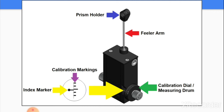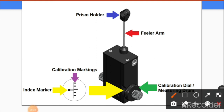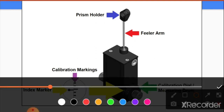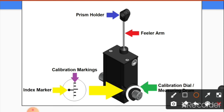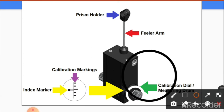Here are the parts of the applanation tonometer. There is a prism holder where the prism is placed with apex-to-base orientation. This apex-to-base prism splits the mire into two parts. When the inner edges of the two mires are touching together, you record the IOP. You rotate the calibration or measuring drum to achieve this.